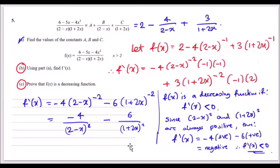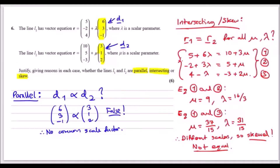Let's move on to question 6. The line L1 has a vector equation with a position vector and direction vector d1. The second line has a different direction vector and different scale factor — one uses lambda, the other mu — meaning they are totally different lines. We need to justify whether lines L1 and L2 are parallel, intersecting, or skew.